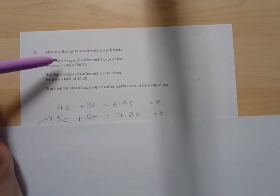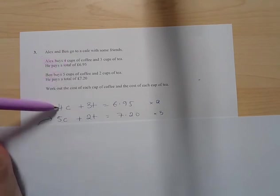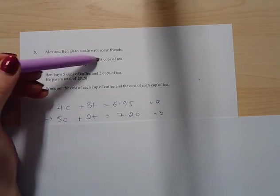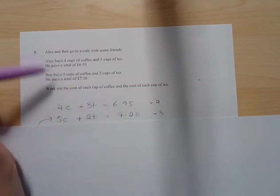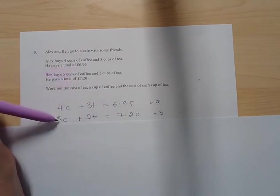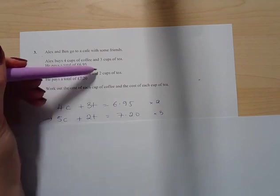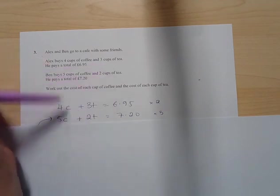So the first sentence, Alex buys four cups of coffee, I've summarised with 4C, and three cups of tea, I've summarised with 3T, and that's equal to 6.95. And then Ben buys five cups of coffee, I've summarised that with 5C, plus two cups of tea, 2T equals £7.20.